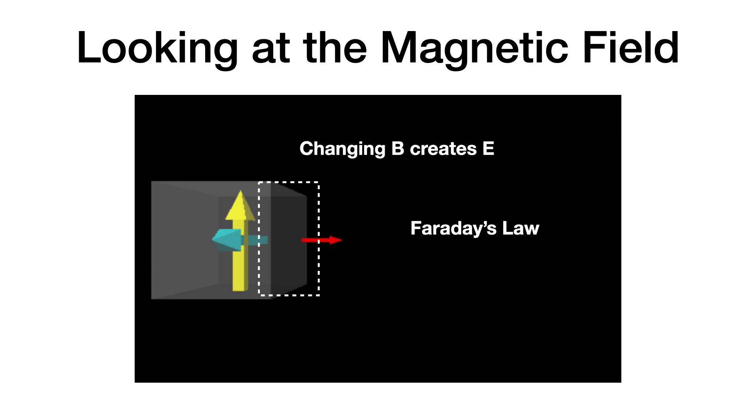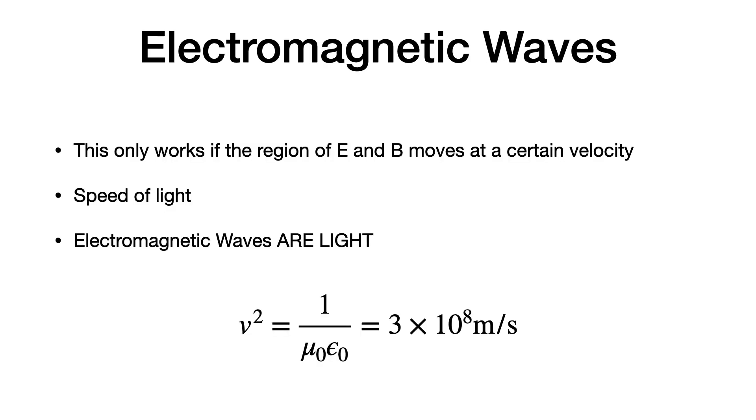So it turns out that works. I can have that changing electric field make a magnetic field, and that changing magnetic field make an electric field in those two square boxes. But this only works for that region of space to move if that box is moving with the speed of light.